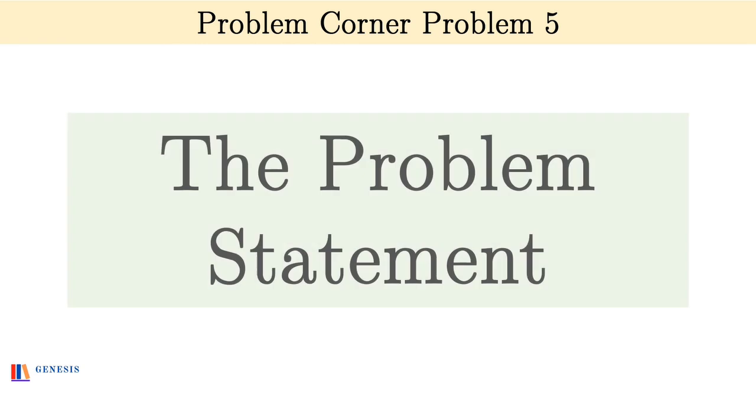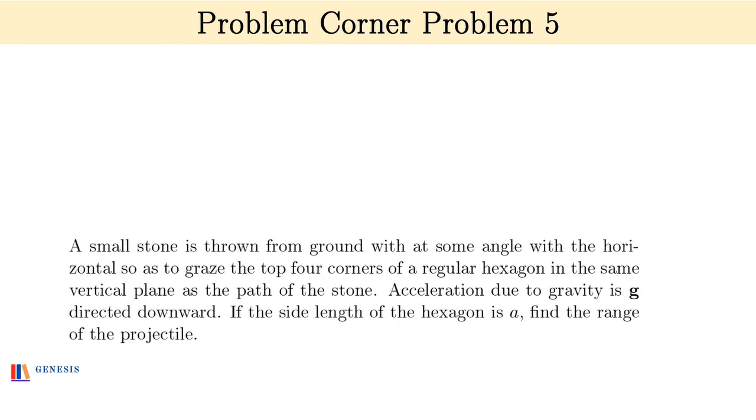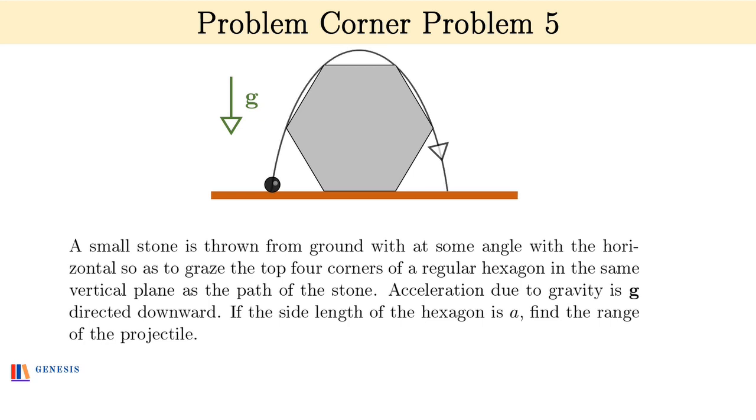So without further ado, let us see the problem. The problem statement is: a small stone is thrown from the ground at some angle to the horizontal so as to graze the top four corners of a regular hexagon in the same vertical plane as the path of the stone.